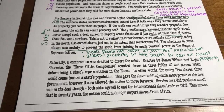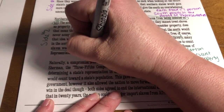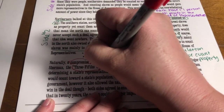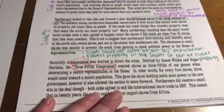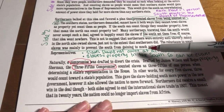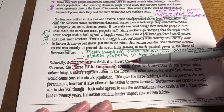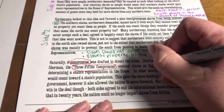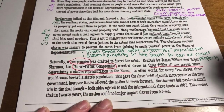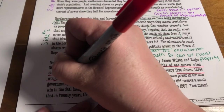Now here is our compromise. The word compromise means we come to an agreement. What you need to write down is called the Three-Fifths Compromise — make sure you put that on your organizer. The compromise was drafted by James Wilson and Roger Sherman. The Three-Fifths Compromise counted slaves as three-fifths of one person when determining a state's representation in the House. In other words, for every five slaves, three would count towards a state's population.